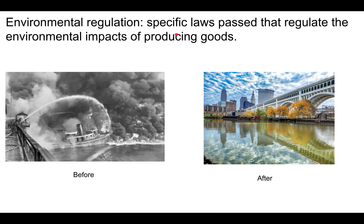Environmental regulations are specific laws passed to regulate the environmental impact of producing goods. Here's an example: these two images show the same river years apart. In the 1960s, this river caught fire because there was so much pollution being dumped into it — it actually caught fire, and not just once but several times. This tragedy helped spawn the environmental movement, and governments got together and passed laws regulating how economic growth affects the environment.